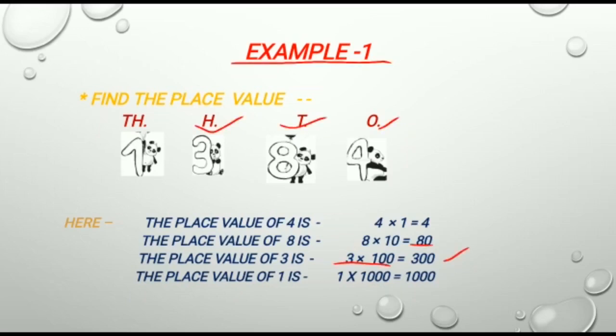And the place value of 1 is 1 multiplied by 1000 is equal to 1000. Because in this number 1 is at 1000's place.